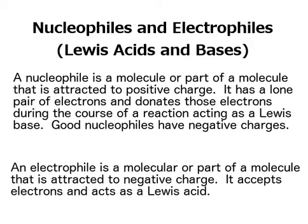So a nucleophile is a molecule or a part of a molecule that likes positive charge. And if something likes a positive charge, that means it's probably got some negative charge to it. So good nucleophiles have lone pairs of electrons, and they'll often have negative charges associated with them. During the course of a reaction, a nucleophile will react with a positive charge or a partial positive charge, and as it reacts, it usually donates a lone pair of electrons to that positive charge. As it donates those electrons, we think of it as a Lewis base — an electron donor.